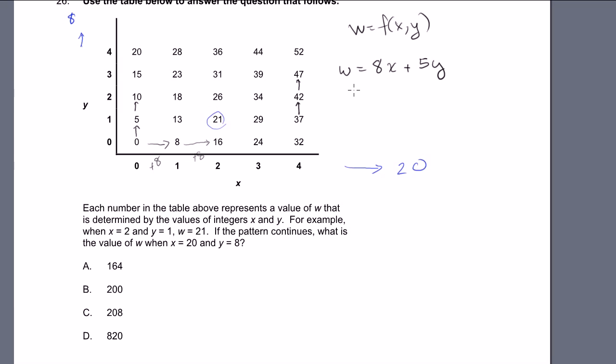And let's verify it. If we pick the point 3, 2, that would be w equals 8 times 3 plus 5 times 2. So w is equal to 24 plus 10 equals 34, which is indeed what it equals. So we found our function of x and y. And what are they asking? The pattern continues. What is the value when x equals 20 and y equals 8?